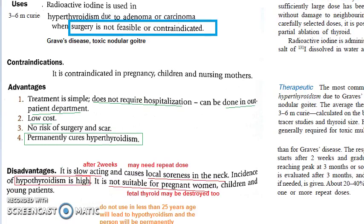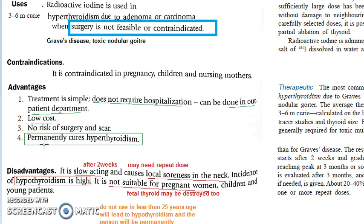Advantages of radioactive iodine: it is oral treatment, it doesn't require hospitalization — you can do it as an outpatient. It is very low cost, there is no surgery, no surgical scar, and if it works to destroy the thyroid tissue, it permanently cures hyperthyroidism.